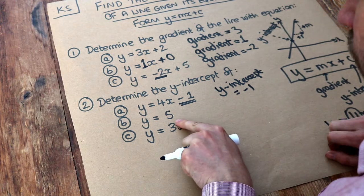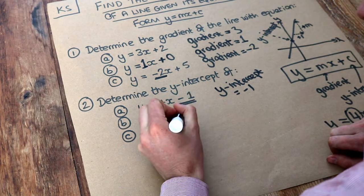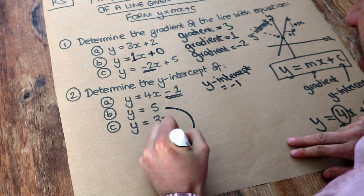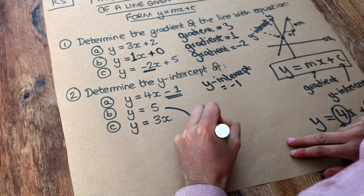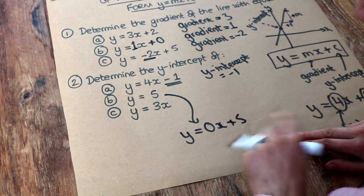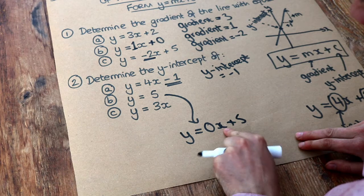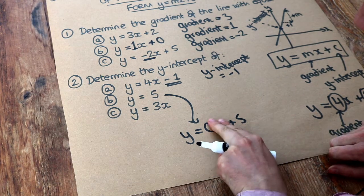What about this one? Well, notice we don't have an x here. But we could write this if we wanted to, as y equals 0x plus 5. Because if you have 0 lots of x, 0 times x is just 0. And that would just simplify to y equals 5.